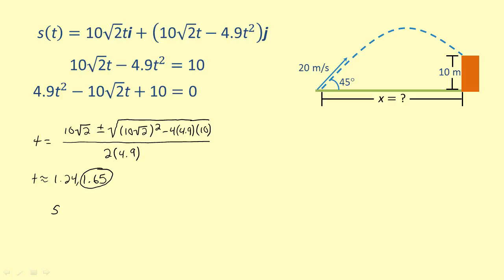So we want to find s of 1.65. Simplifying each component, we get 23.33i plus 10j. Notice that the vertical component is equal to 10, so we can verify that the ball will be 10 meters above the ground.